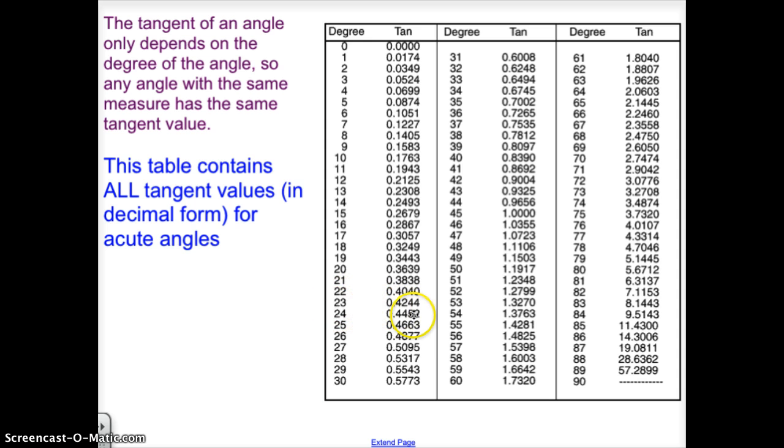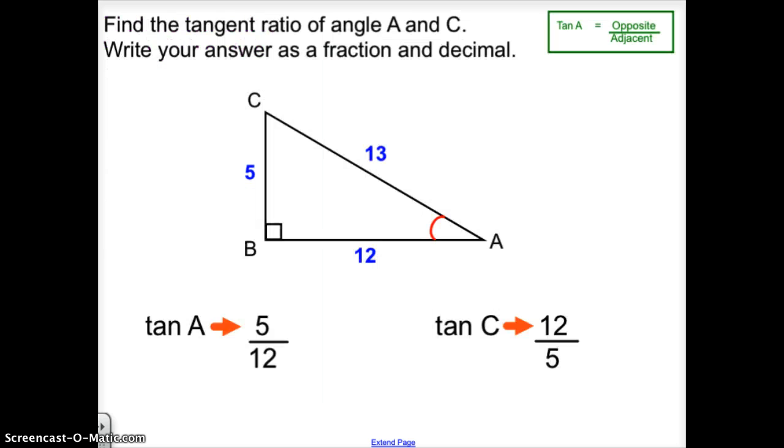And at this point, your job is to find the closest decimal to 0.4166. Once you've found that, you can then go to the degree measurement across from it, and that is the degree of your tangent for angle A.